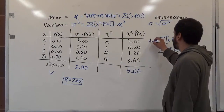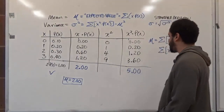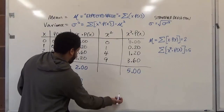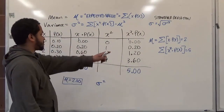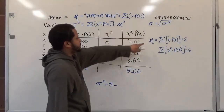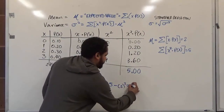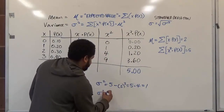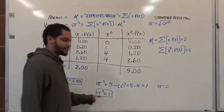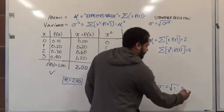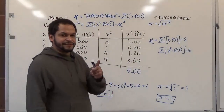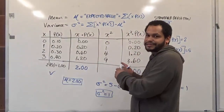Our mean is 2.0. Now for the variance: we take the sum of x² times P(x), which is 5, and subtract the mean squared — 2² = 4 — giving us 5 minus 4 = 1. So our variance is 1. For the standard deviation, we take the square root of the variance: the square root of 1 is 1. So our standard deviation is also 1. Remember: if your probabilities sum to 1 and each value is between 0 and 1, you can complete this table.